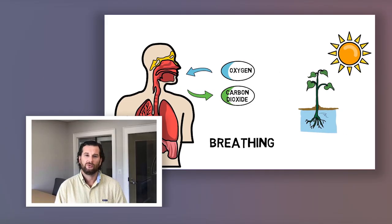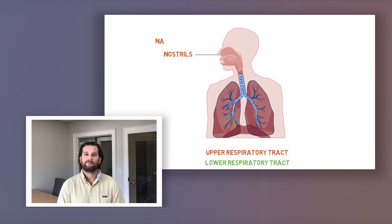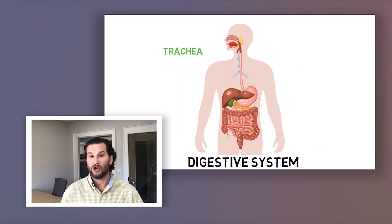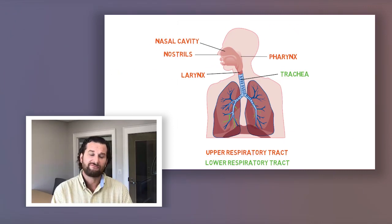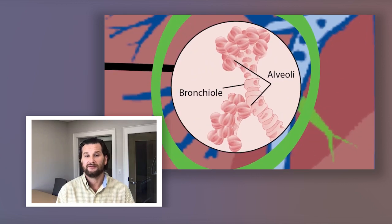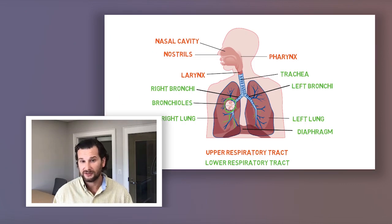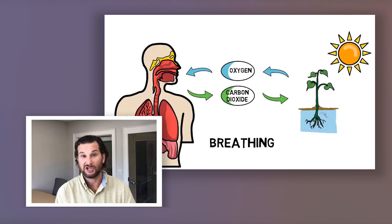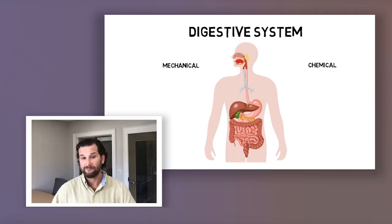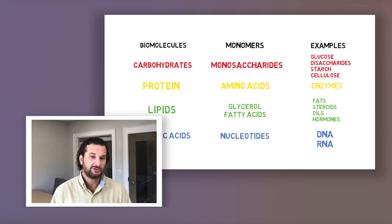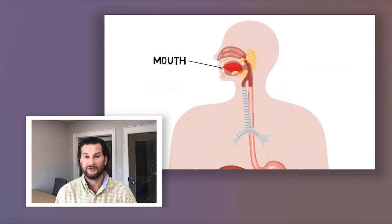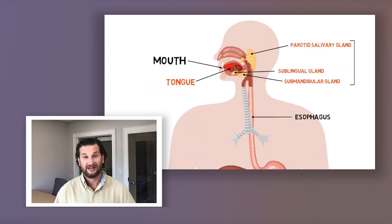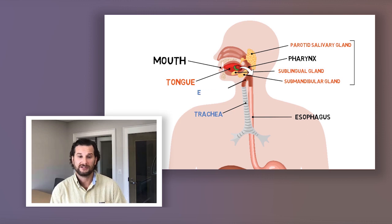Respiratory system: know the whole anatomy of the respiratory system, including the upper and lower tracts, respiratory functions, and the mechanics of breathing and respiration. For the gastrointestinal system, know the anatomy of the digestive system, the path of food through the system. Know the accessory organs: the liver, the pancreas, the gallbladder, and the tongue, and how digestion works in that GI system.